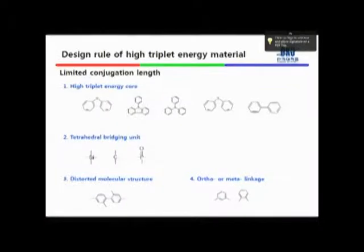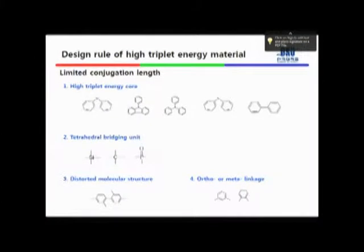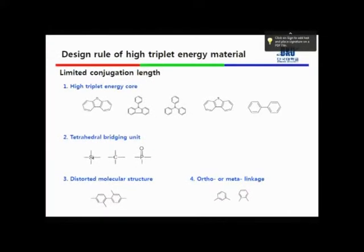There are several design rules to develop high-triplet-energy materials. Most people use high-triplet-energy cores like dibenzofuran, dibenzothiophene, indopine, and carbazole. Another strategy is to use tetrahedral breaking units such as silicon, methyl, or phosphine oxide groups. These units are very useful to achieve high triplet energy because they separate the conjugation units. Another strategy is to use a distorted molecular structure — for example, a dimethyl biphenyl structure — where distortion shortens the conjugation length and increases triplet energy. Also, using ortho or beta linkage can help achieve high triplet energy.